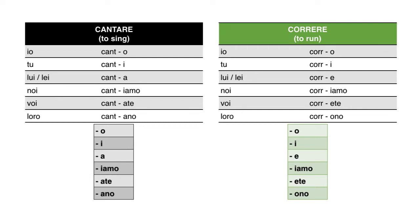The ending for io is -o in both: io canto, io corro. The ending for tu is also the same in both tables: tu canti, tu corri. And the ending for noi is also the same: noi cantiamo, noi corriamo.